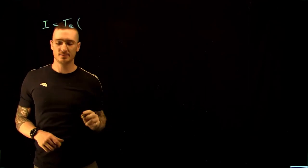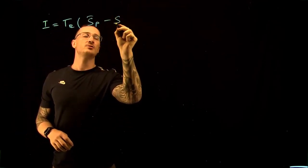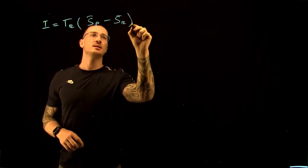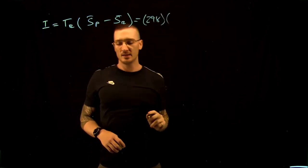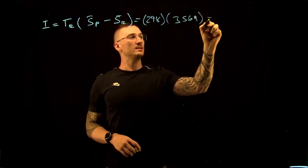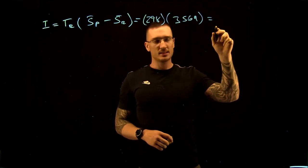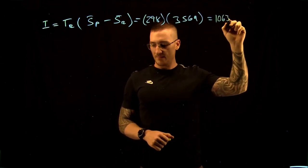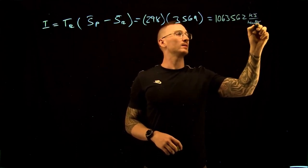We can write that our irreversibility is equal to the temperature of our reactants times the entropy change. So we get that this is equal to 298 Kelvin times 3,569. And this gives us 1,063,562 kilojoules per kilomole.